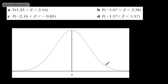This is our fourth video looking at finding probabilities using the standard normal distribution. The first one, we're asked to find the probability that Z is between 1.25 and 2.16. In the video, we'll look at different ways in which you can find these — some techniques you might like, some you might prefer others.